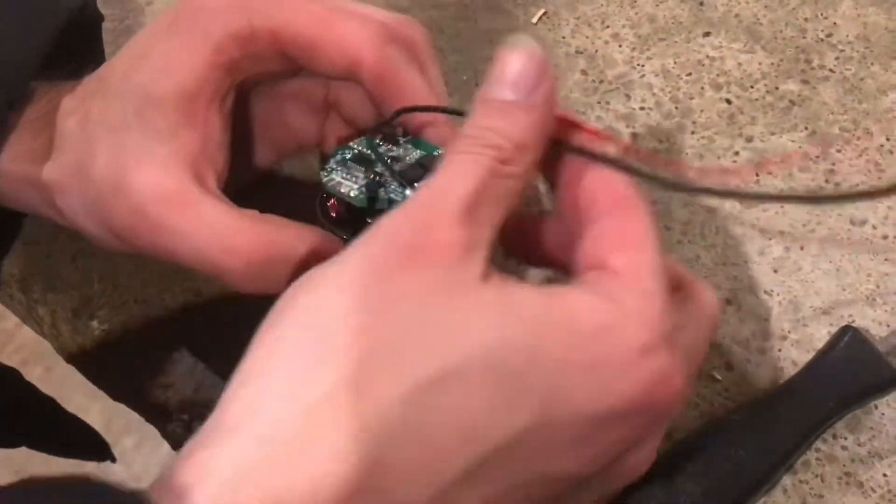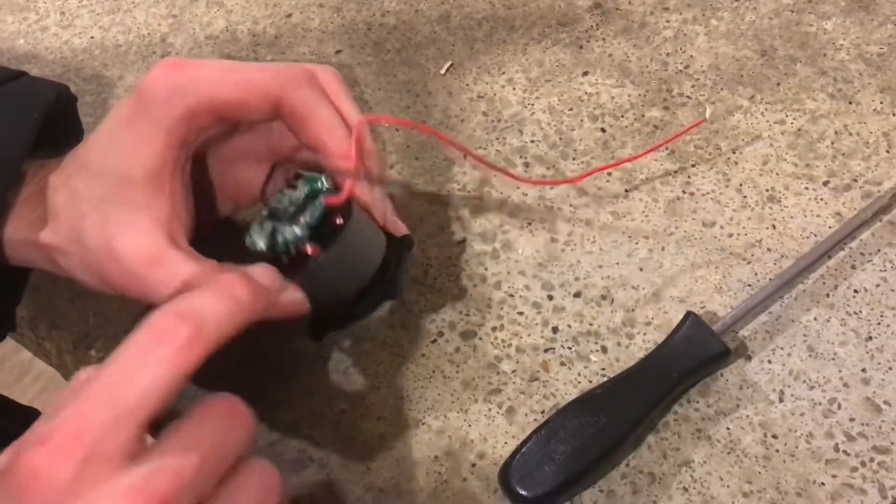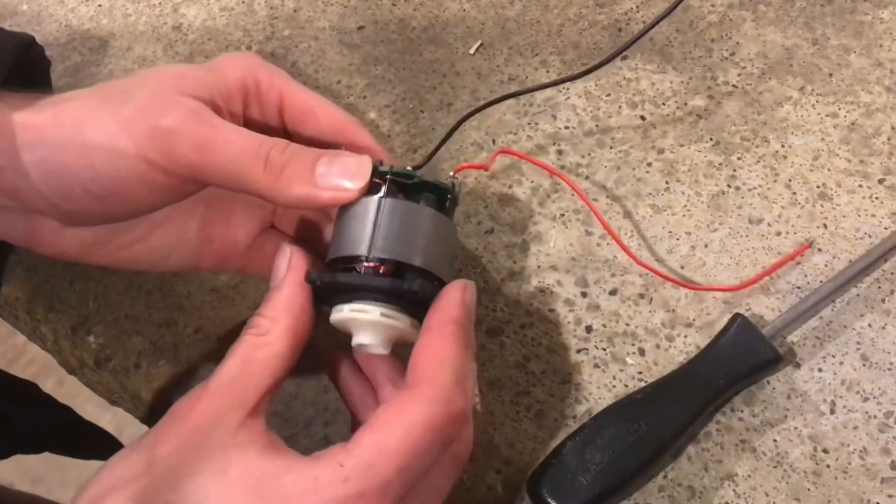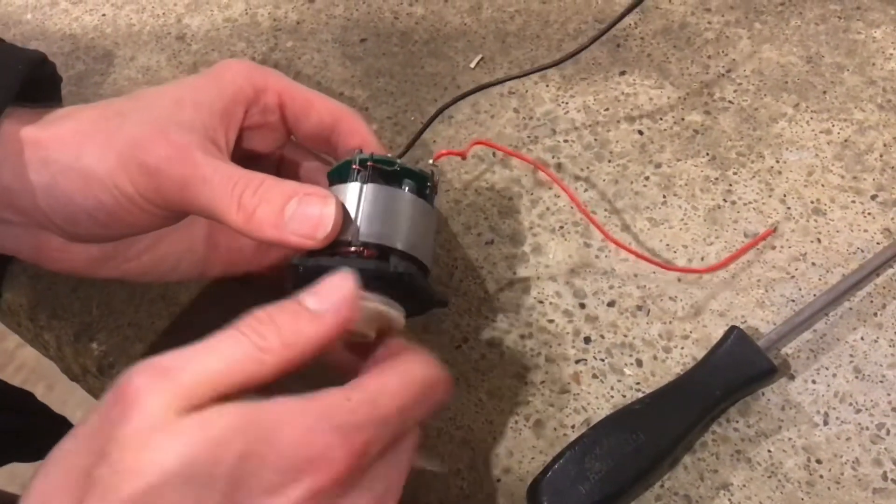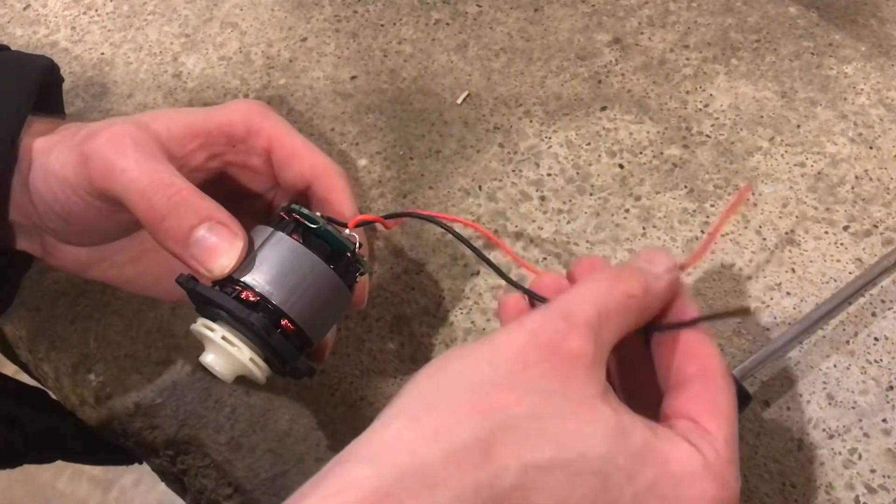I disconnected the wires going to the motor controller board and actually just connected them directly onto the windings. So now when I spin the rotor this will be acting as a generator. It'll produce a sine wave.